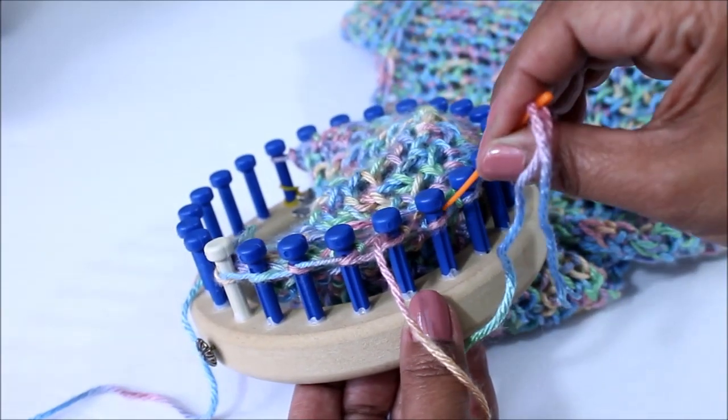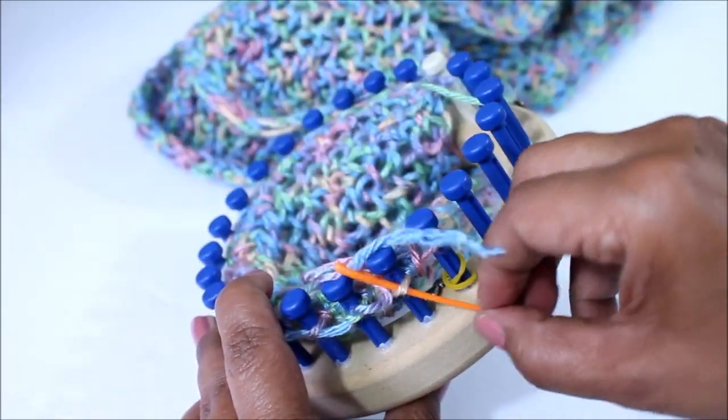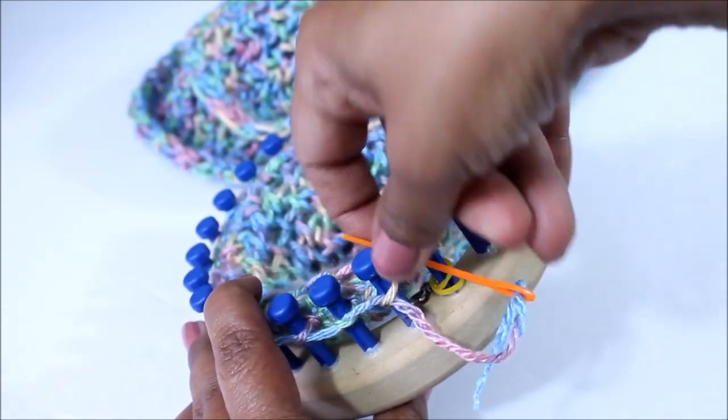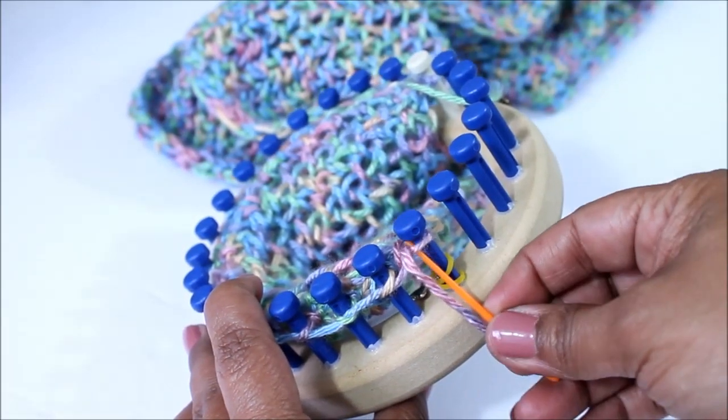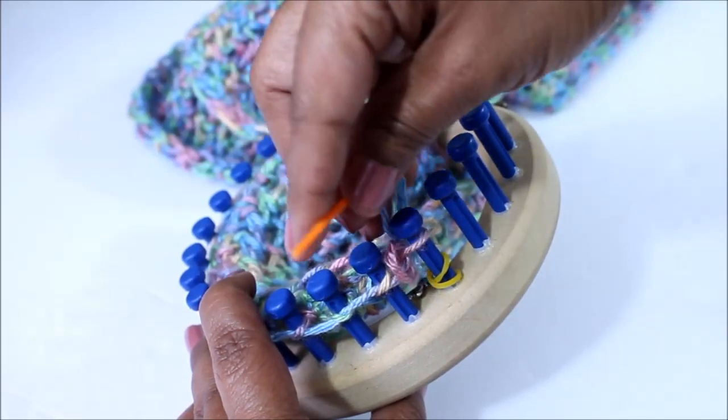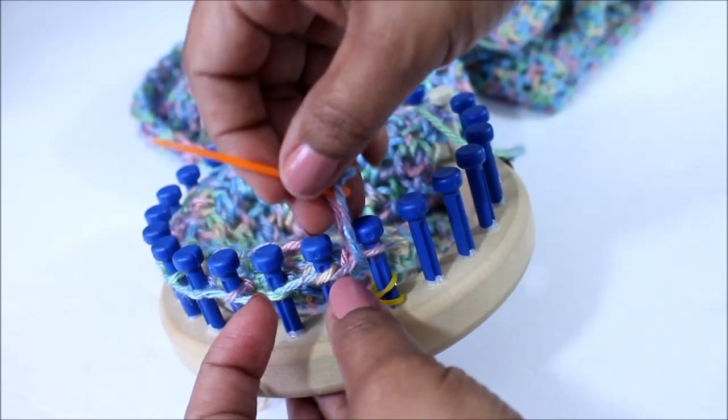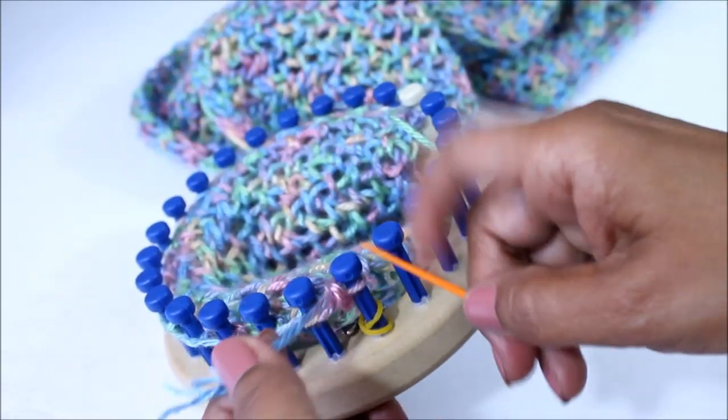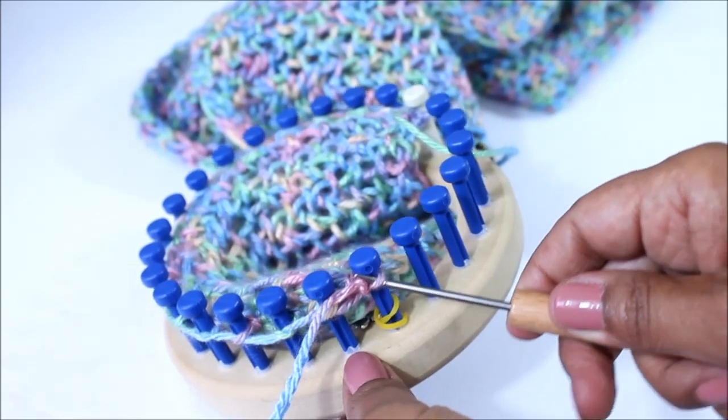Continue that process until you're all the way at the very last peg and there you're going to take your needle in two times because you want to make a knot with that last bit of yarn. Tighten your knot, get your hook and now we're going to remove the loops from the pegs.